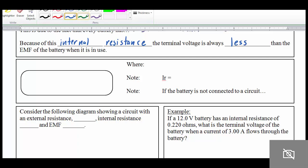So to calculate this value, we use the following formula. We say that V term, or terminal voltage, is equal to EMF minus I times R.